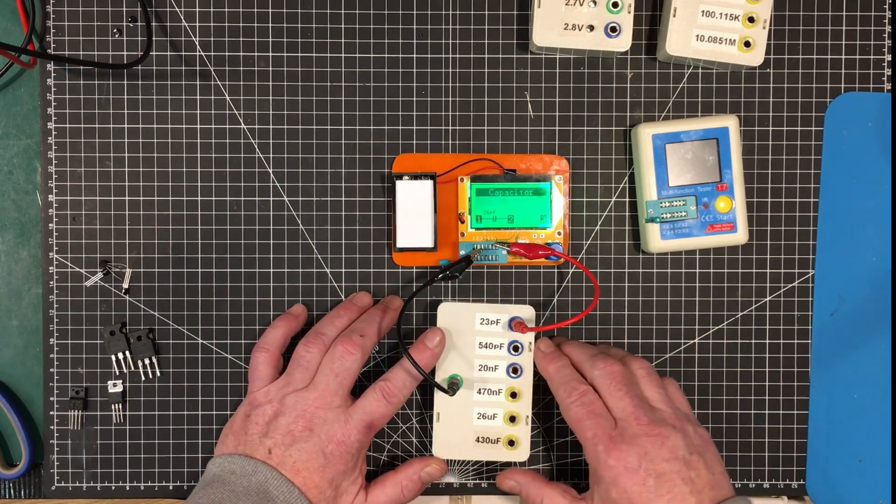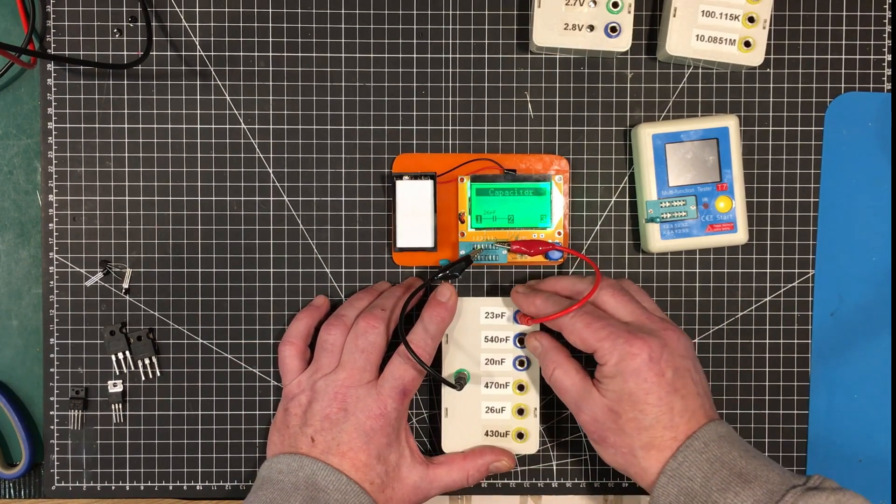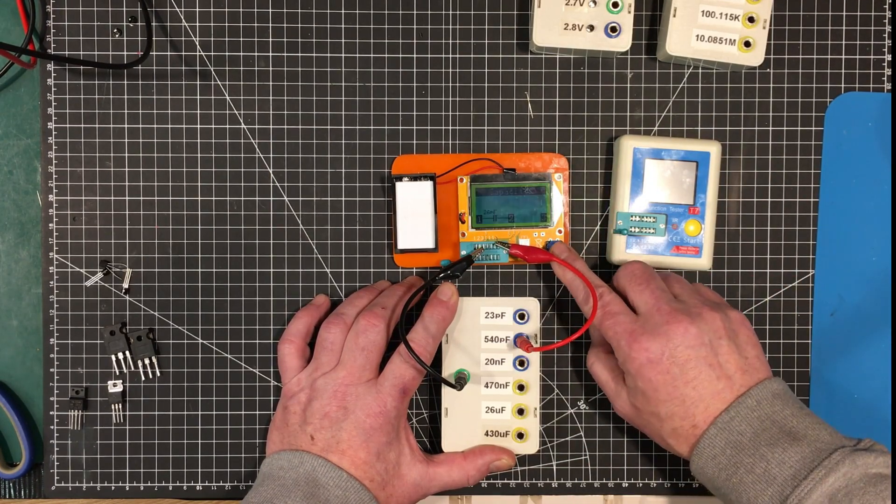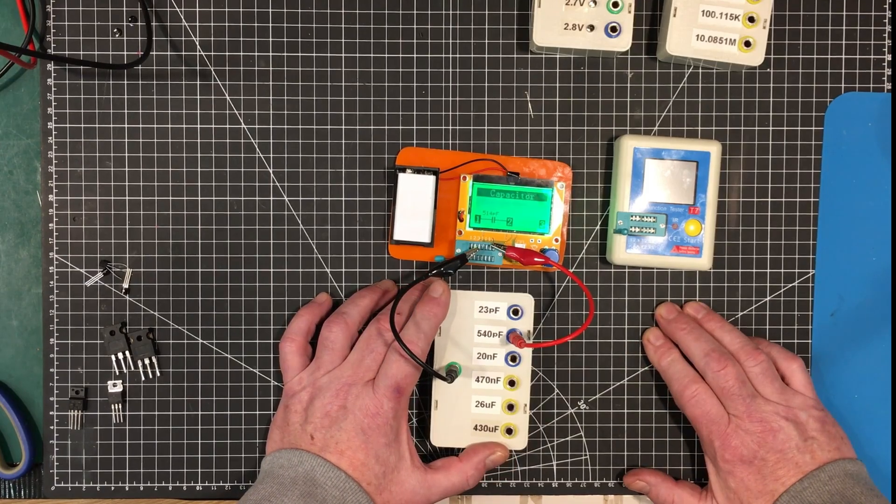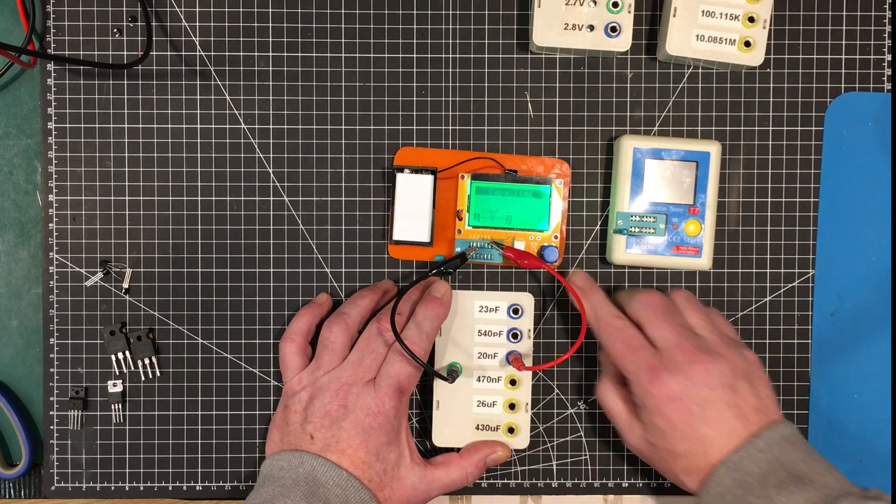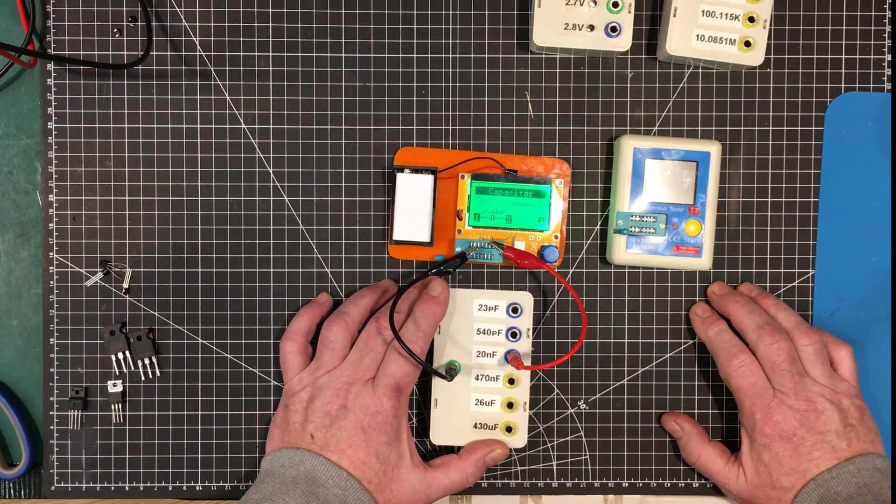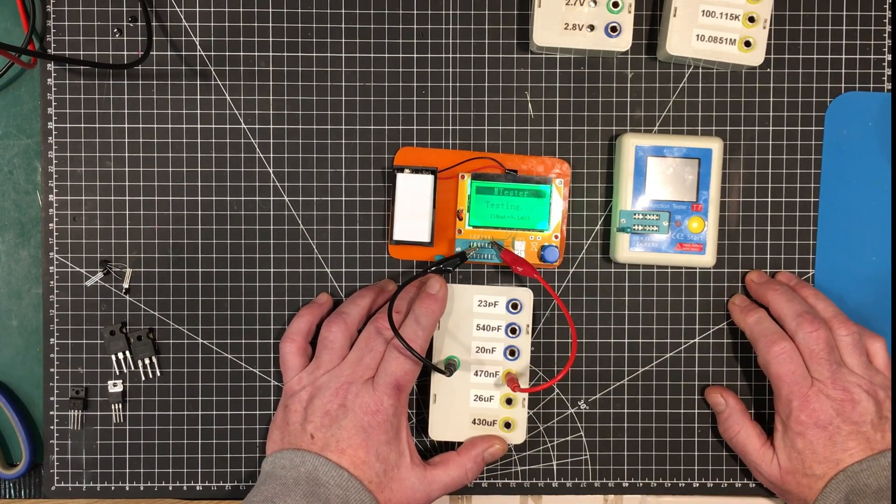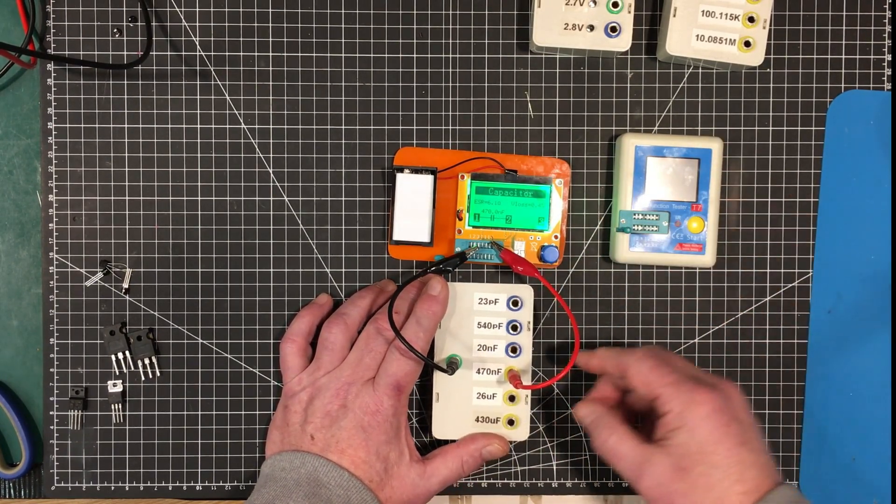26 picofarads. It's a bit more accurate than that. That one said 28. So down the low end is more accurate. Let's see as it goes up. 514, it's off about 35 picofarads, that's less than 10 percent. 17.63, they're very comparable.